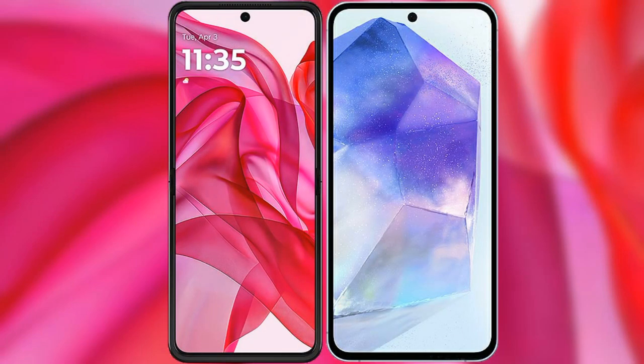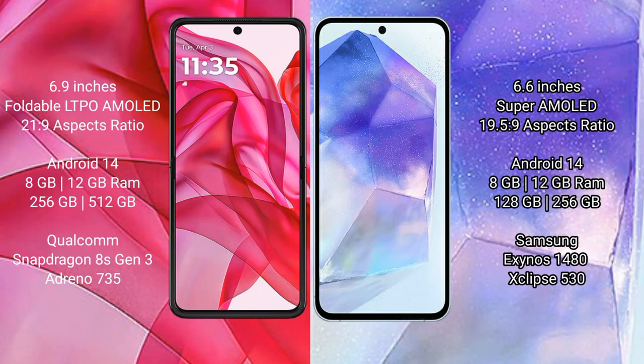I will compare the new Motorola Razr 50 Ultra with the Samsung Galaxy A55. The Motorola Razr 50 Ultra comes with a 6.9-inch foldable LTPO AMOLED display and an aspect ratio of 21:9. The Samsung Galaxy A55 comes with a 6.6-inch Super AMOLED display and an aspect ratio of 19.5:9.